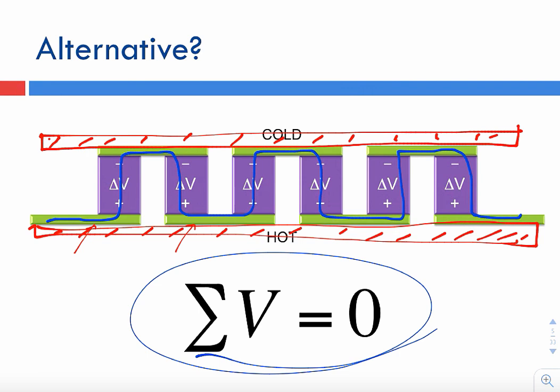Is there any trick that will allow me to use smaller legs and still connect them in series, like shown here, and get a larger voltage?